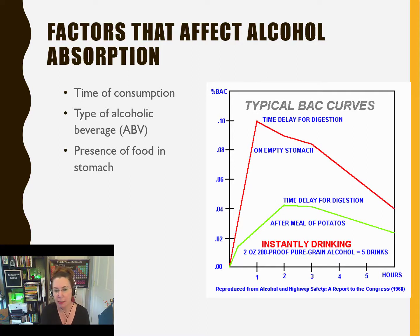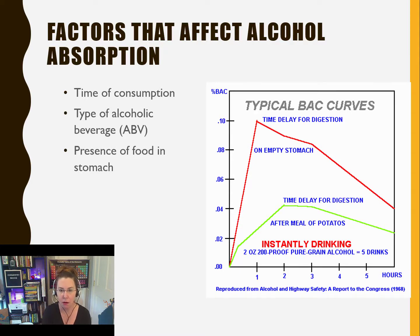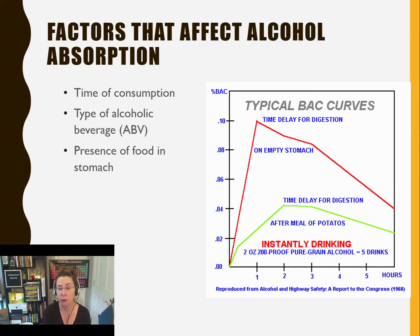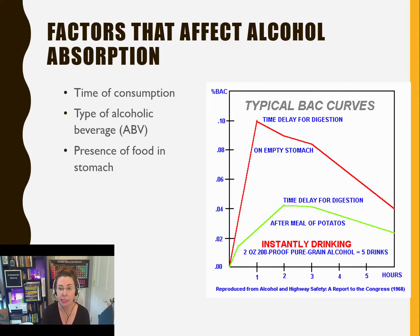In this graphic, based on a study done in 1968 — and the data still stands — the green line shows blood alcohol levels after an individual ate 16 ounces of potatoes before being given 2 ounces of pure grain alcohol, essentially 5 drinks at once. The red line shows the same amount of alcohol given on an empty stomach. The increase in blood alcohol content is much quicker, and the decrease takes a much longer time.